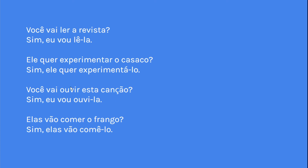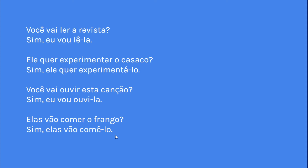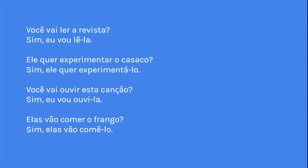I do a video on this concept, so definitely check that out if you need more help. And then we, of course, have an accent on verbs that end in E-R. So E-R and A-R verbs have accents when they're added to the direct object pronoun in a sentence with the infinitive, but the I-R verbs do not have an accent, ok?